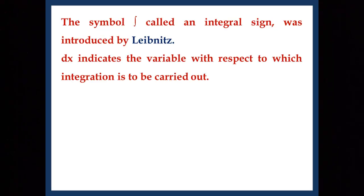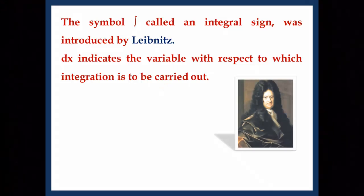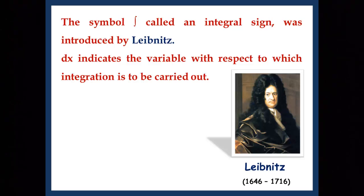Now this particular symbol is called an integral sign and was introduced by the famous mathematician Leibniz. Why this sign only? You will appreciate that this seems to be an elongated S — yes, it is an elongated S, an English alphabet — because an integral can be expressed as the limit of a sum. So if you consider the first letter of the word 'sum' and elongate it, you get the sign of an integral.